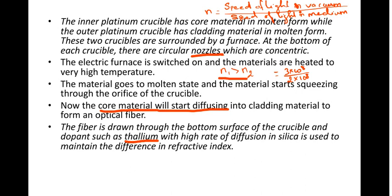Refractive index n is equal to the speed of light in vacuum divided by the speed of light in the medium. The speed of light in vacuum is 3×10⁸ meters per second, and in the medium it changes. This is how the refractive index is calculated. That completes the preparation of optical fiber using the double crucible technique.